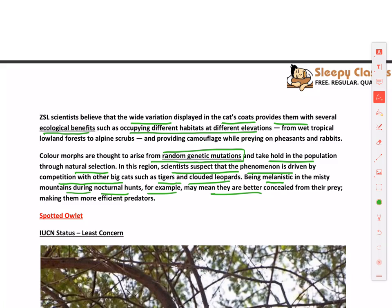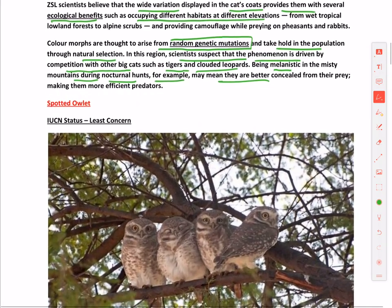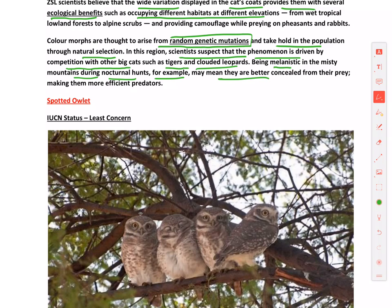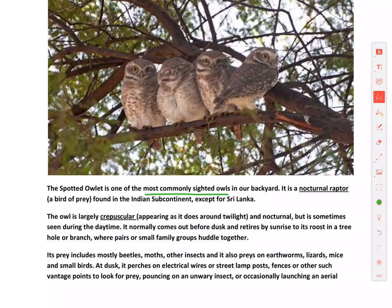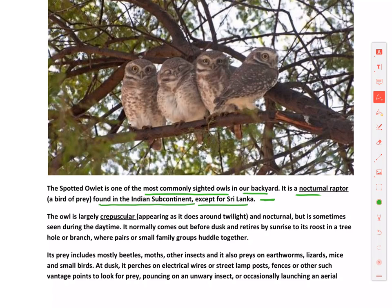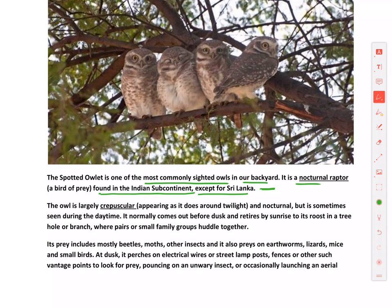Next is regarding the Spotted Owlet. Its IUCN status is Least Concern. It is one of the most commonly sighted owls in our backyards and is a nocturnal raptor — raptor meaning a bird of prey. It is found in the Indian subcontinent except Sri Lanka. Though it is called a nocturnal raptor, it is actually crepuscular.